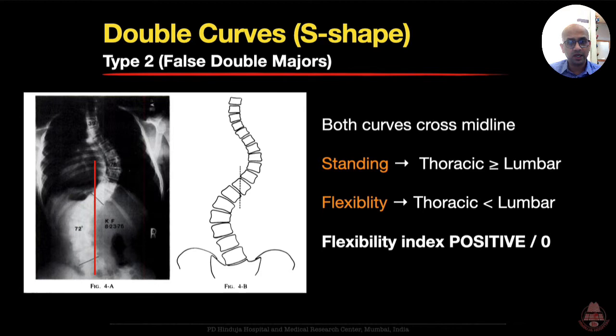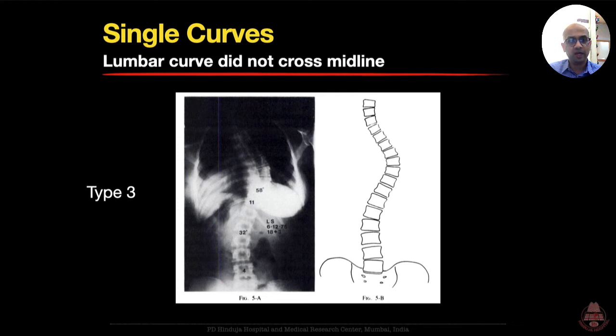The Type 2 curve was a false double major curve where both curves again cross the midline. On standing, the thoracic curve is larger than or equal to the lumbar curve, but here the lumbar curve is far more flexible than the thoracic, making the flexibility index positive. Then there were single curve types where the lumbar curve does not cross the midline.